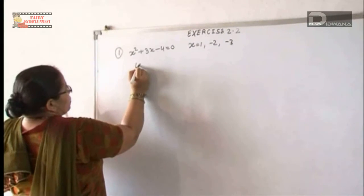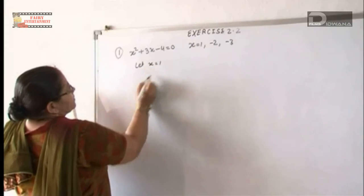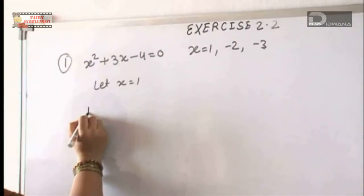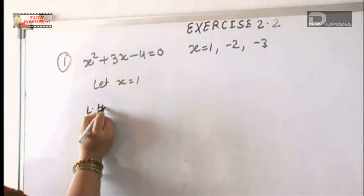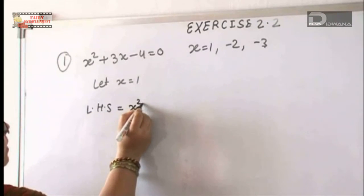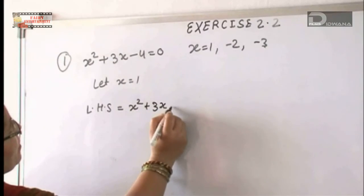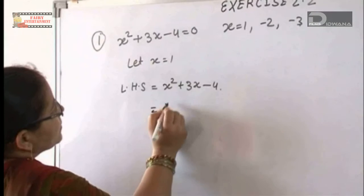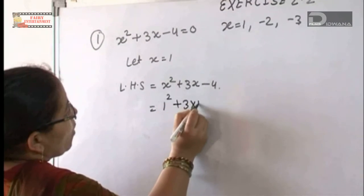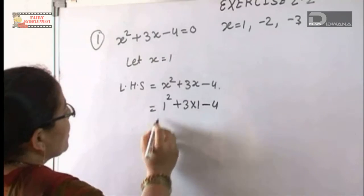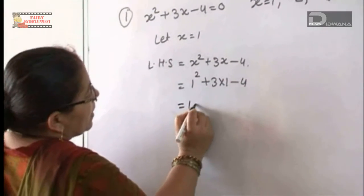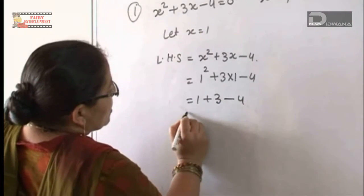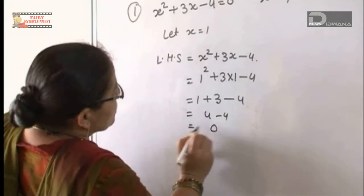Let me take x equal to 1. So instead of x, on the left hand side we write x squared plus 3x minus 4. The x value we are writing is 1: 1 squared plus 3 into 1 minus 4. 1 squared is 1, plus 3 times 1 is 3, minus 4 — that means 4 minus 4. The answer will be 0.